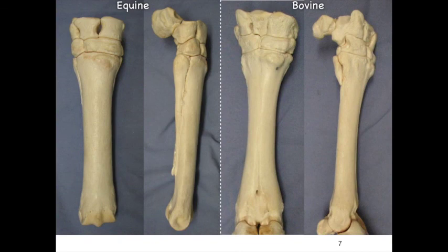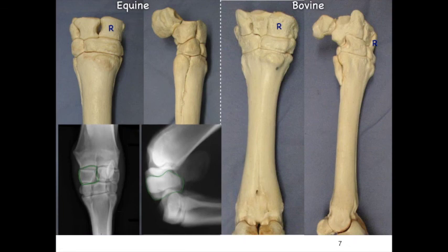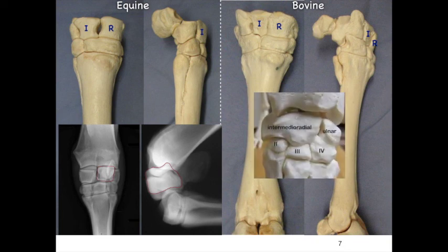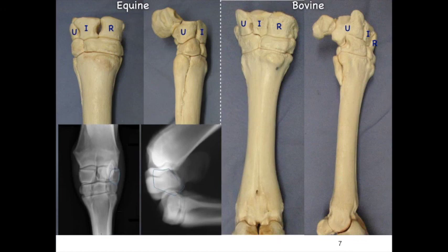Let's move down to the carpus. Going medially to laterally: the radial carpal bone is medial — I always think of radius meaning medial. In the center we have the intermediate carpal bone, which we did not have in the canine; in the canine we had the fused intermedioradial carpal bone. This intermediate carpal bone is present in both the bovine and the equine. Laterally we find the ulnar carpal bone, and also laterally the accessory carpal bone, which provides attachment for the ulnaris lateralis and flexor carpi ulnaris muscles.